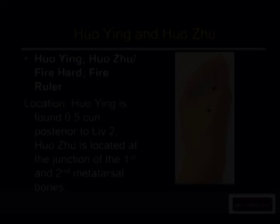Ho ying and ho zu points are basically Master Dong's version of Liver 2 and Liver 3. Ho ying is found half a cun posterior to TCM Liver 2. Ho zu is located at the junction of the first and second metatarsal bones on the foot. With practice, it's basically your Liver 2 and Liver 3.